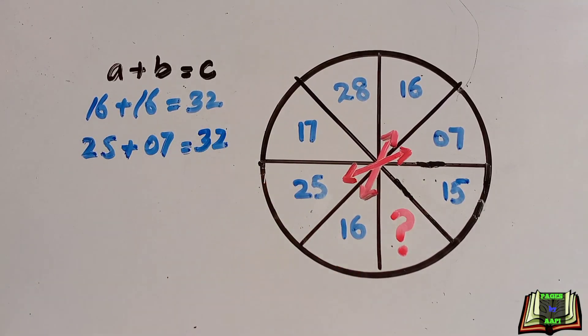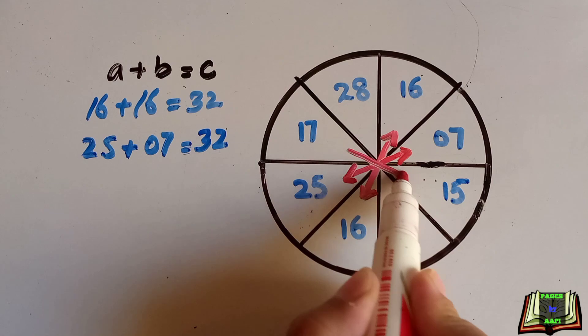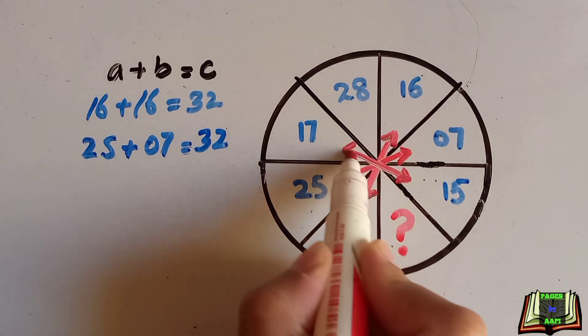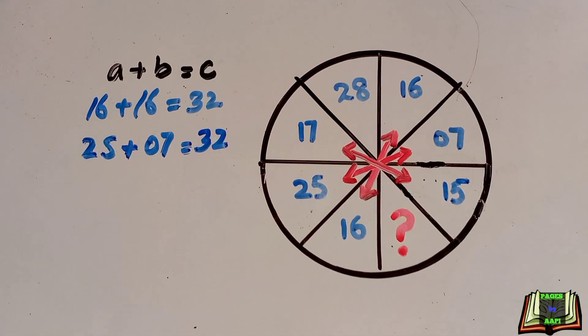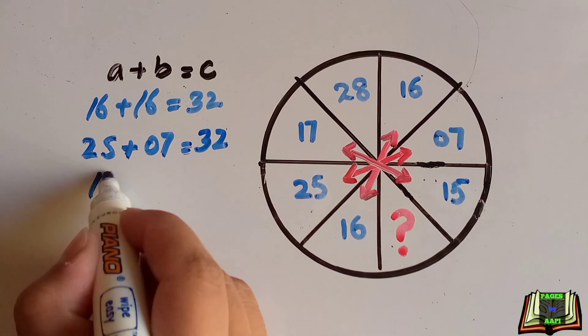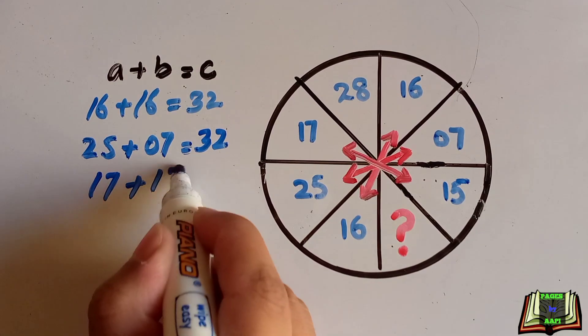And we will check the third, 17 and 15. Here a is 17 and b is 15, and if we add both we get 32, same answer.